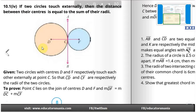We have two circles - one circle with center D and the other circle with center F. Both circles touch each other externally at point C. We need to prove that C lies on the join of centers D and F, and DF = DC + CF.